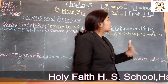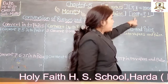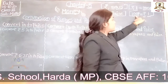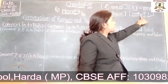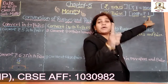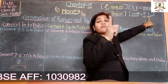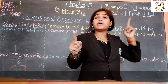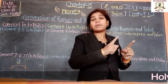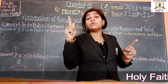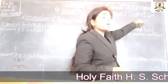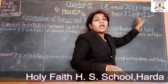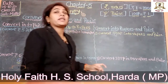And just the opposite — hundred paise is equal to one rupee. So one rupee is equal to hundred paise, and hundred paise is equal to one rupee. Now let's take an example.